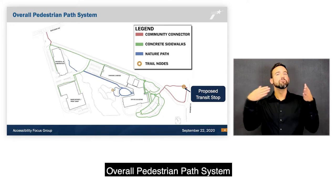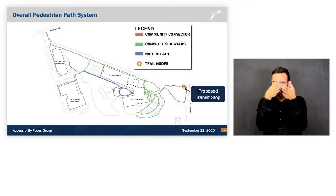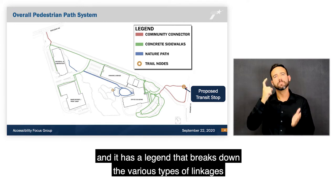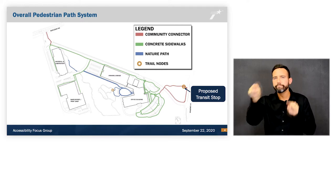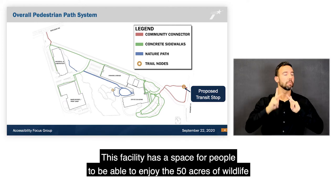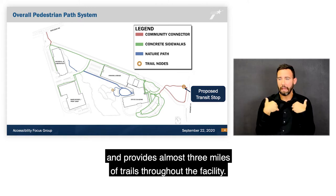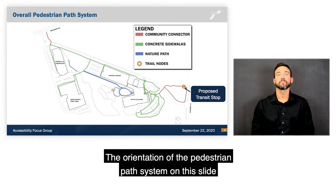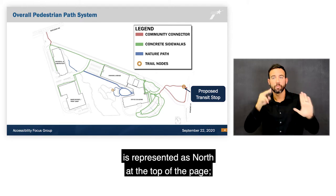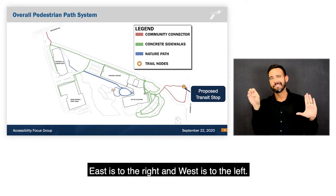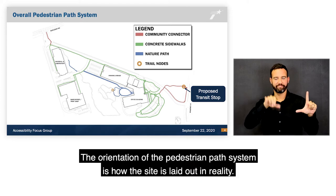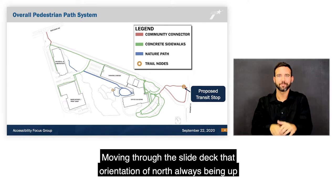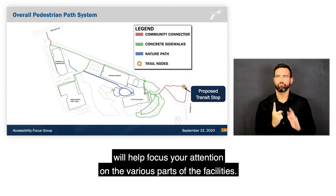This is the overall pedestrian path system slide. It consists of an overall image of the Stastny Campus with a legend breaking down the various types of linkages throughout the site. This facility has space for people to enjoy 50 acres of wildlife and various features around the site, providing almost three miles of trails. The orientation is represented with north at the top, south at the bottom, east to the right, and west to the left — consistent throughout the slide deck.